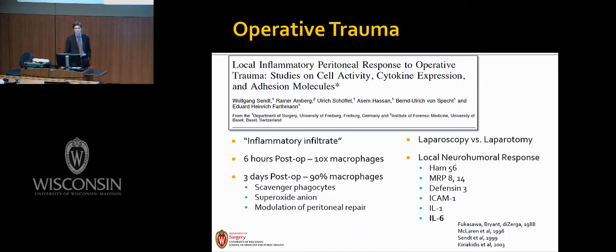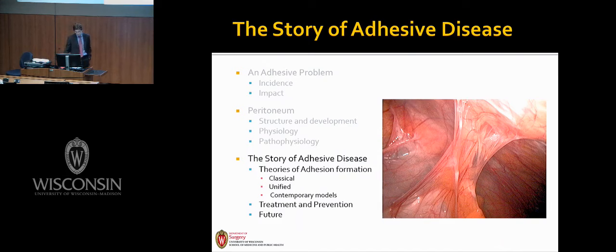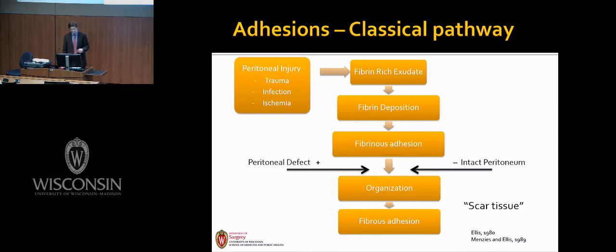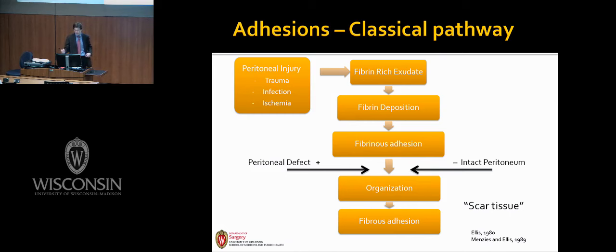So we've set the stage for adhesions to develop. The classical understanding of adhesion development is borrowed heavily from subcutaneous wound healing: an insult occurs — trauma, ischemia, or infection — resulting in an outpouring of fibrin-rich exudate into the peritoneal cavity. This exudate is either rapidly absorbed or becomes organized into adhesions, and fibrous adhesions have casually become known as scar tissue. The prevention of adhesions therefore depended upon the meticulous repair of serosal surfaces or peritoneal defects — classical teaching that continues to pervade surgical education today, although I'd argue there's considerable experimental evidence to the contrary.